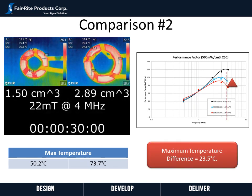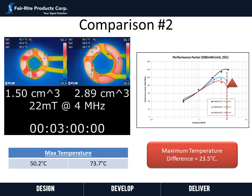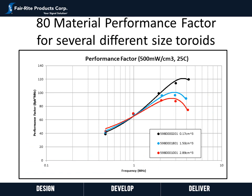We then tested them at 4 megahertz and 22 milli Tesla. As can be seen from the right-hand graph, there is a difference in performance factor being lower on the larger core. After stabilizing, the larger core was 23.5 degrees C hotter than the smaller core running at the same frequency and flux density. To summarize: size should be considered, especially when you start operating at higher frequencies — this is something we are continuing to gather data on.